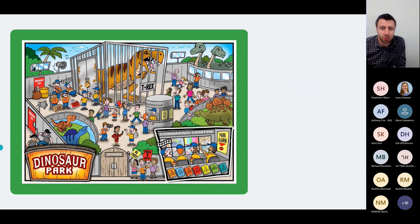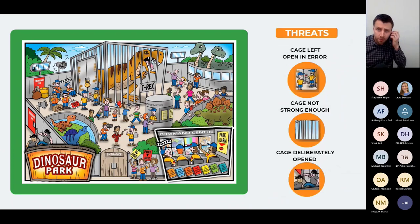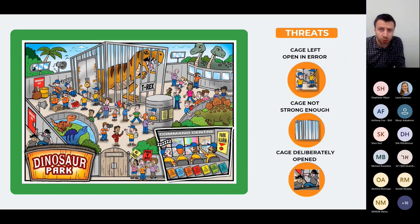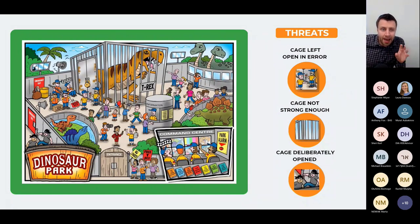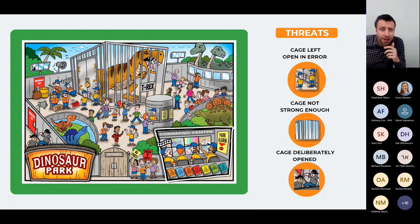The next element is threats — all the potential reasons why we might lose control of the hazard, the reasons why the top event might occur. Identifying all potential threats is a hugely important step and is normally carried out as a brainstorming exercise, or may be taken from a hazard assessment before the bowtie workshop. It's critically important to give sufficient context in descriptions so anyone reading can understand how a threat could lead to the top event and then to a consequence. Threats can be causes of failure, external influences, or operational issues.